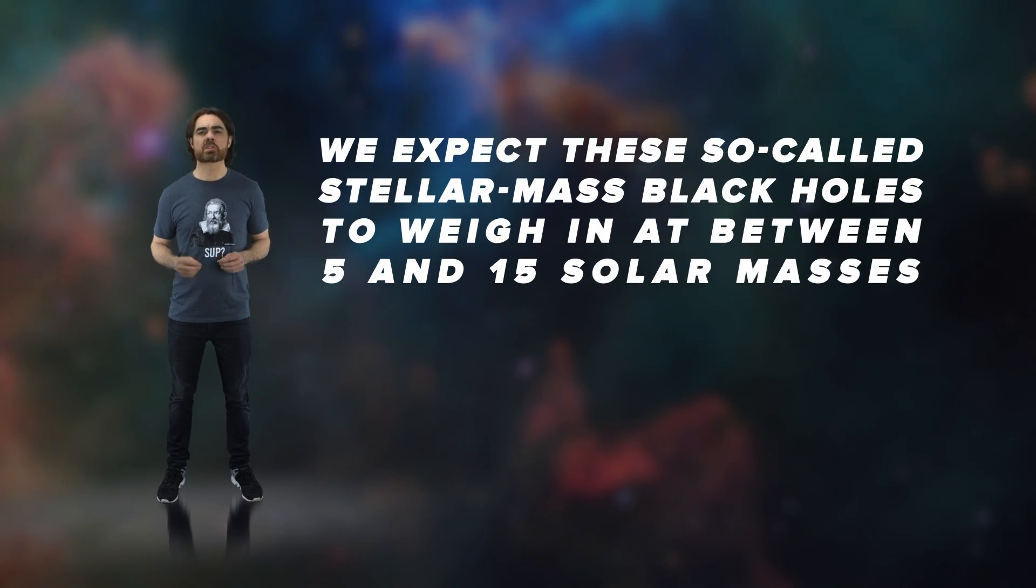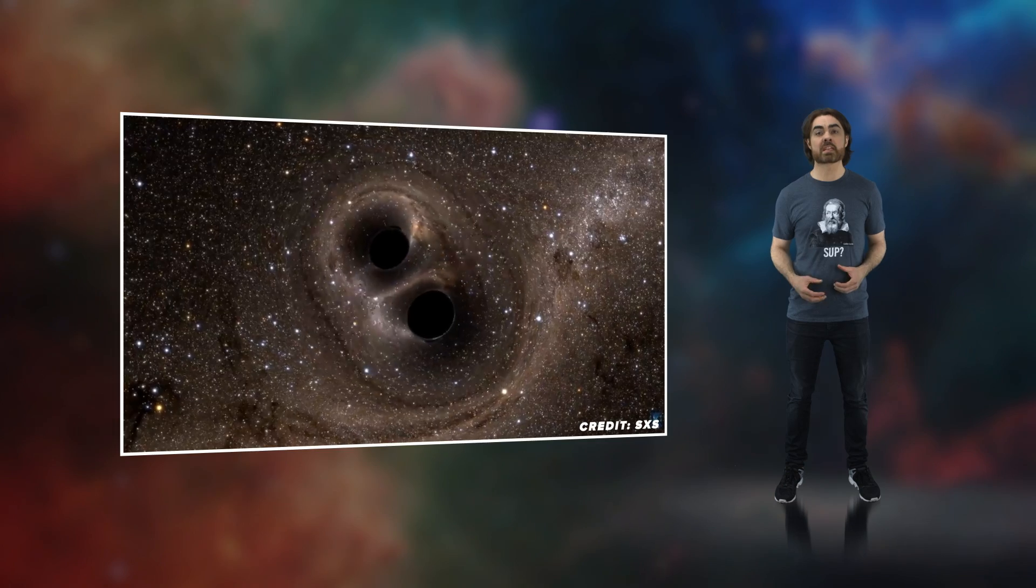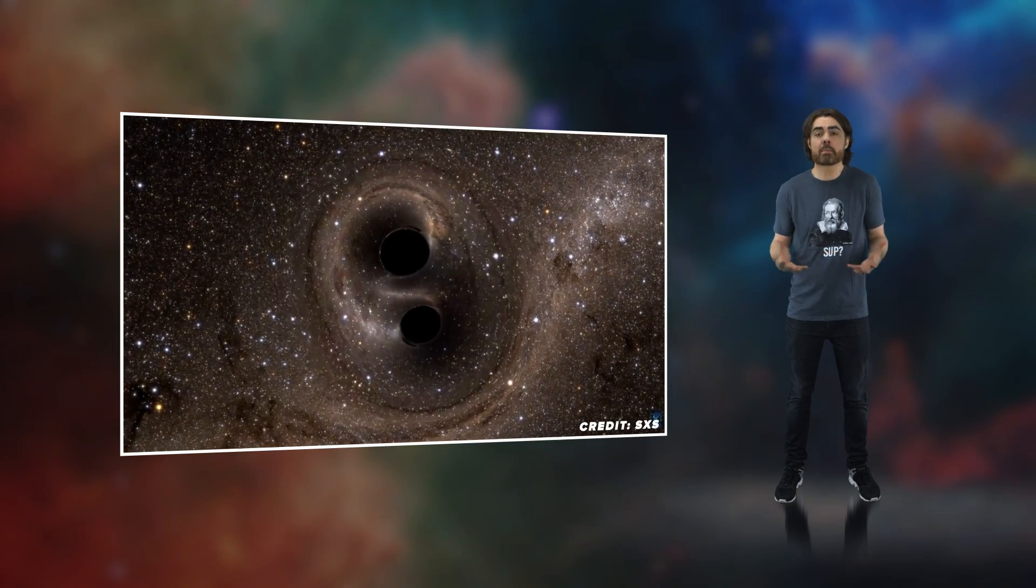We expect these so-called stellar mass black holes to weigh in at between 5 and 15 solar masses, although the recent gravitational wave signals detected by LIGO suggest they may be even more massive. Even after blowing off most of their mass in a supernova, these black holes are still heavier than most stars. This means they migrate towards the center of the Milky Way in a process called dynamical friction.